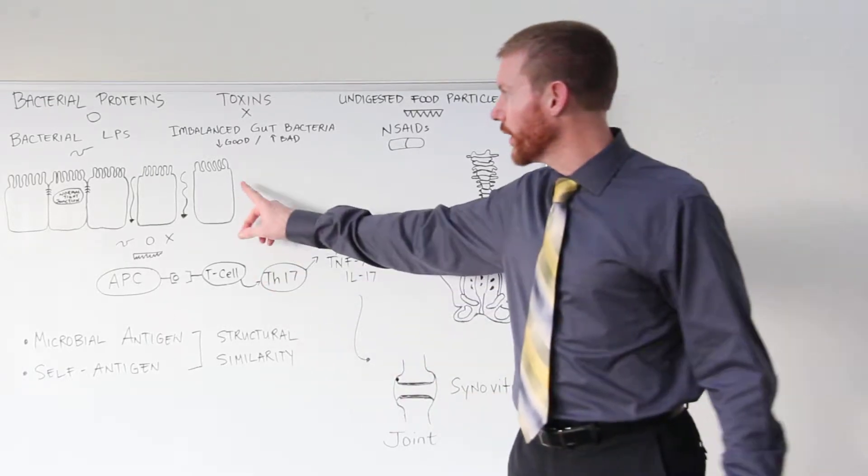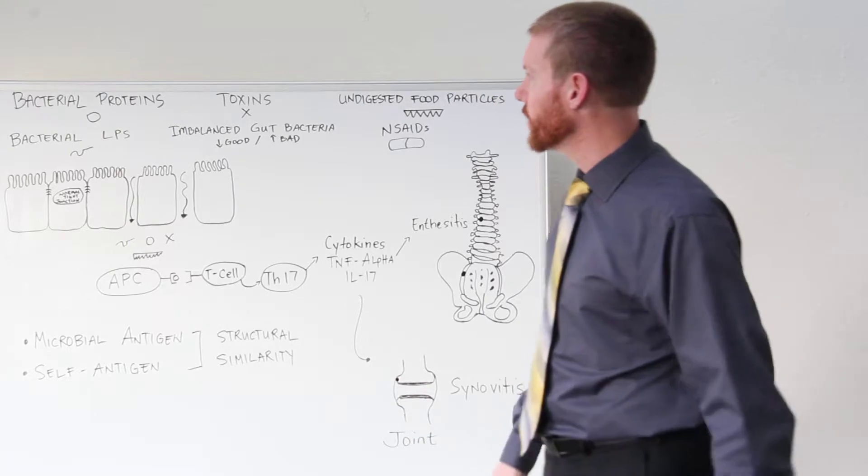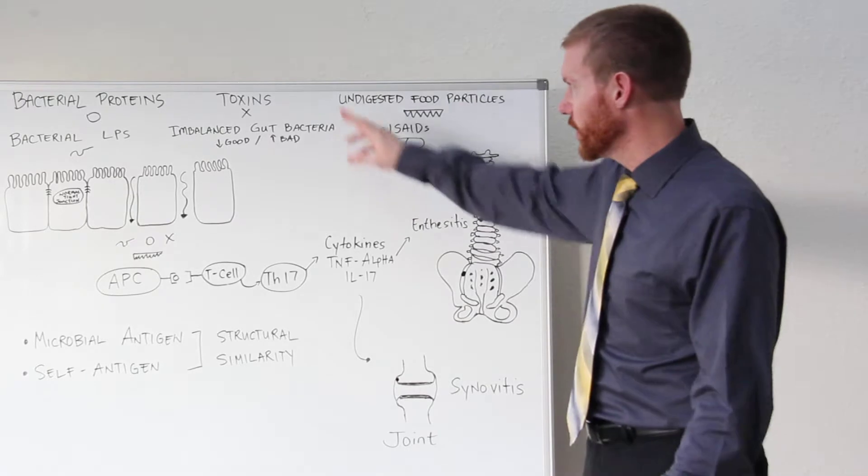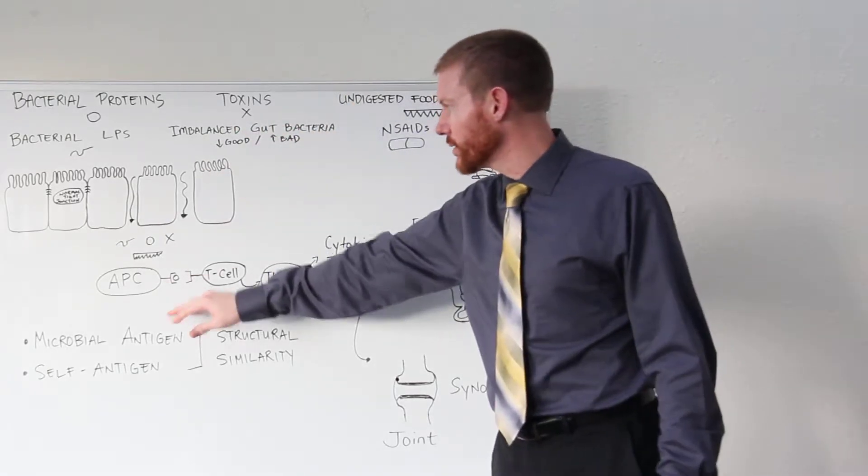The gut lining is a very delicate barrier that's the only thing separating bacterial proteins, toxins, and undigested food particles in the gut from the gut immune system.